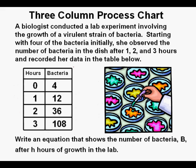We'll look at our last problem. A biologist conducted a lab experiment involving the growth of a virulent strain of bacteria. Starting with four bacteria initially, she observed the number of bacteria in the dish after one, two, and three hours and recorded the data in the table below. Write an equation that shows the number of bacteria B after h hours of growth in the lab. We draw arrows between input values on the left side of the table and likewise on the right side.